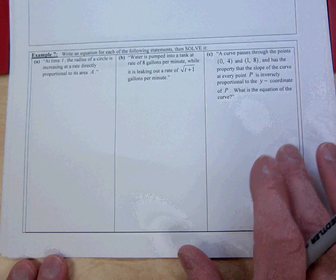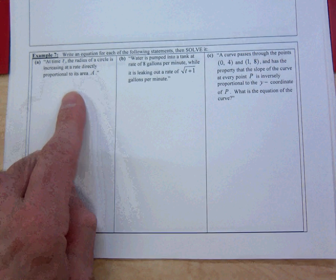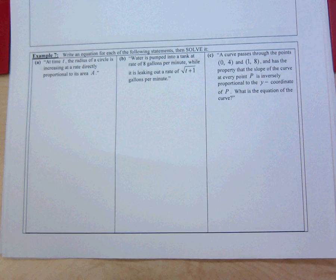Last problem. At time T, the radius of a circle is increasing at a rate directly proportional to its area. Write the differential equation. The variables are R and T, so the rate of change of radius with respect to time is dR/dt = kA. To reduce to two variables, substitute A = πR² for the area.